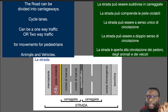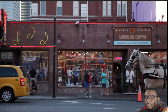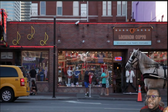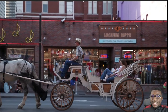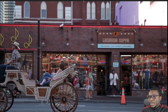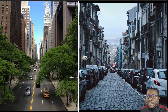Another road type is made for animals and vehicles. When we say animals, we're talking about animals used for transport — for example, a horse transporting people. We also have vehicles, which are the motor vehicles you see on the road.